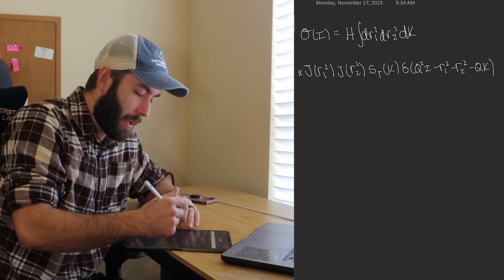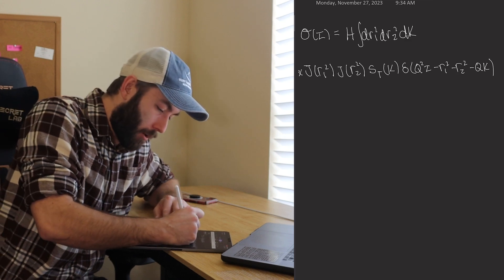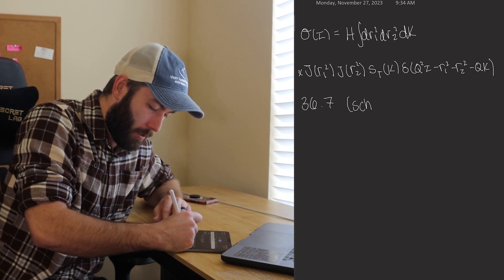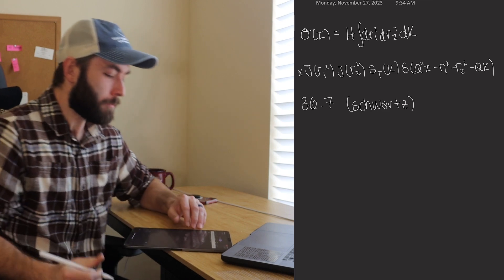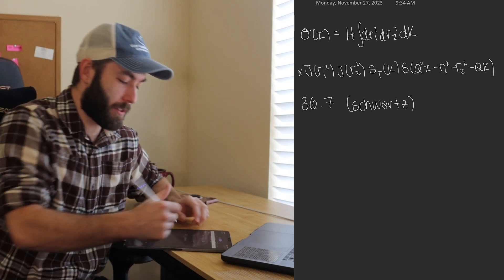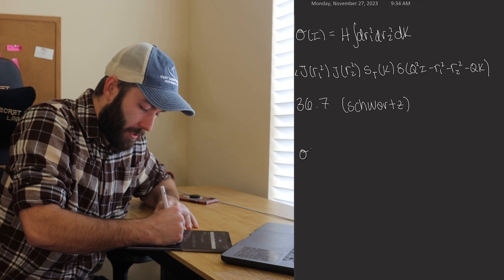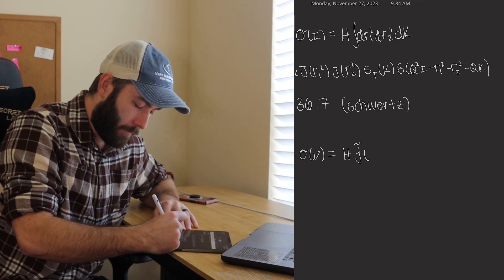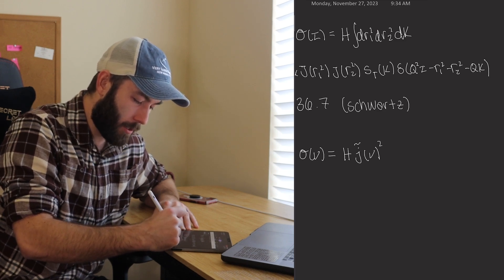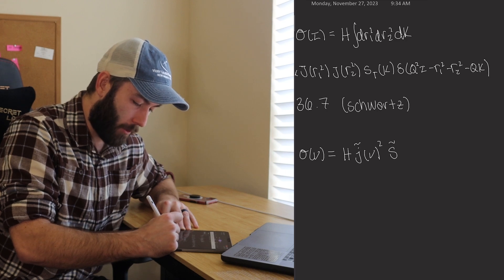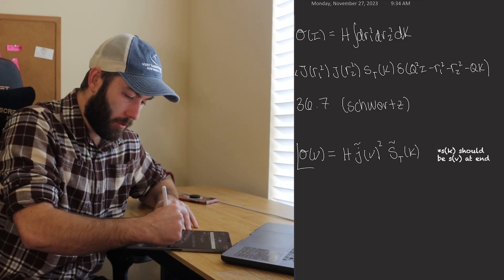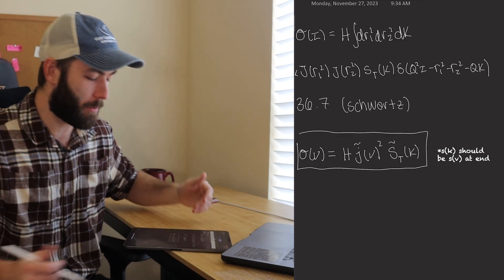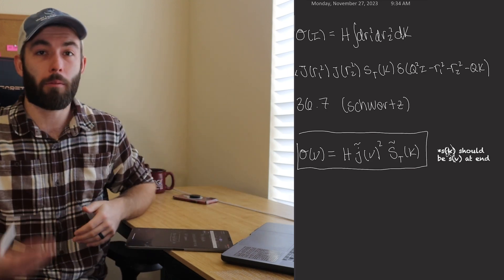One of the main exercises I'm working on — problem 36.7 in Schwartz, which is a QFT book — is to show that if you take the Laplace transformation of this cross-section, sigma of nu, then it just becomes the hard part times the Laplace transformed jet function J̃(nu), squared, times the Laplace transformed soft function S̃(nu). You get a much simpler expression. You use the delta function and it becomes a product of Laplace transforms.